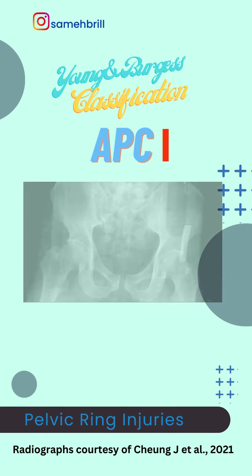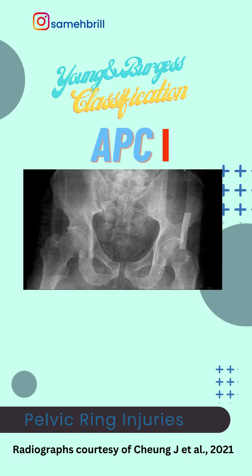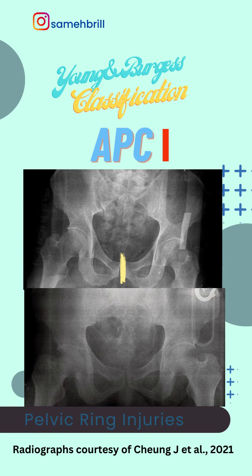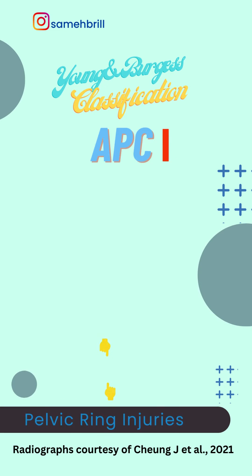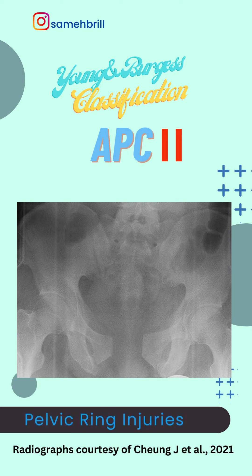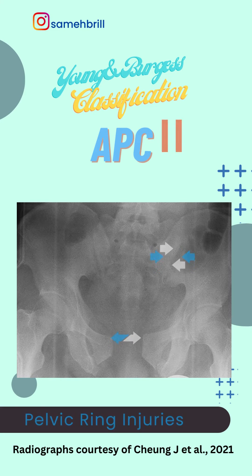In APC1, either symphysial diastasis will be less than 2.5 cm, or there will be vertical fractures of the pubic rami. In APC2, symphysial diastasis will be more than 2.5 cm, there will be widening of the sacroiliac joint, and since there are intact posterior sacroiliac ligaments, the fracture will be vertically stable but rotationally unstable.